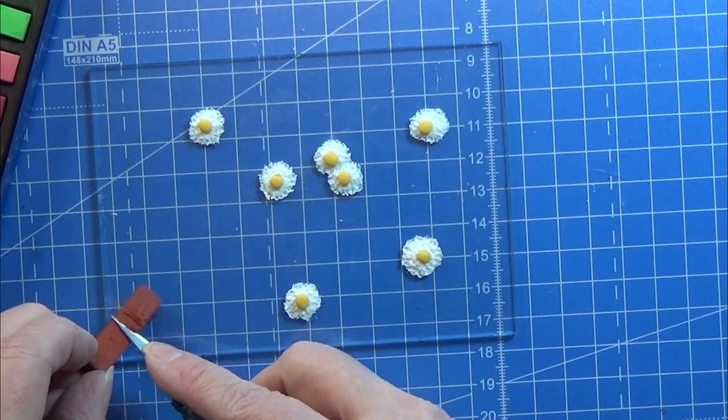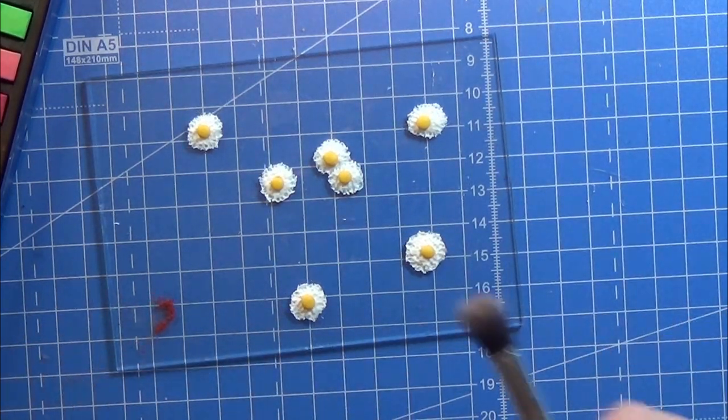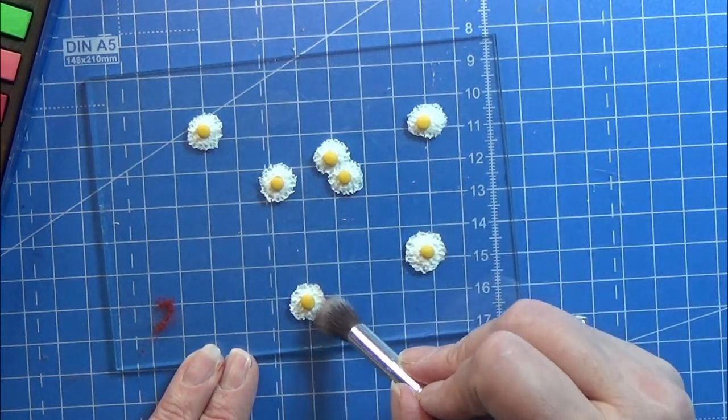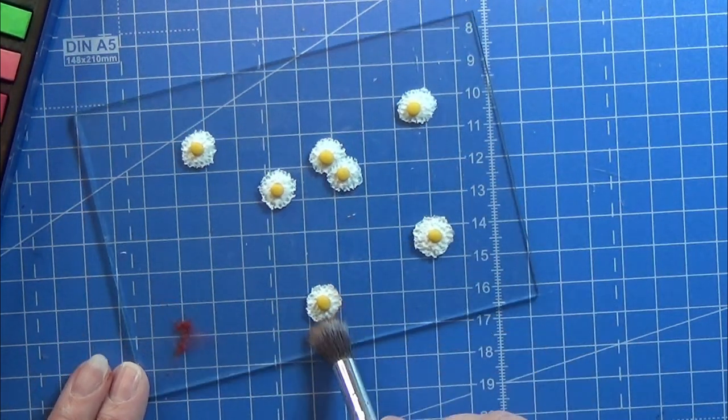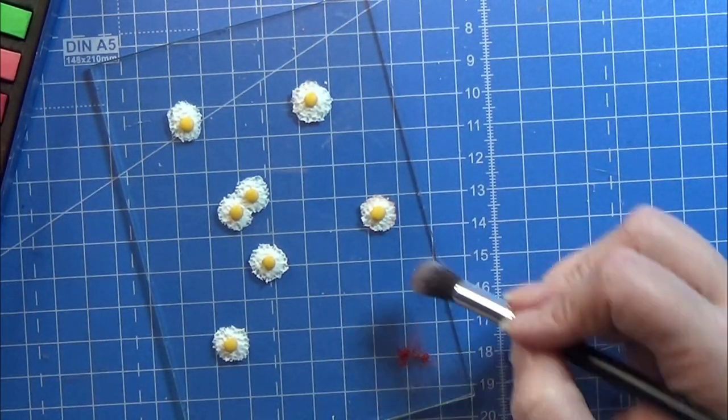I am using some red brown chalk pastel. This is a soft pastel and some dark brown to color the edges of the egg white so it looks like it have been kind of burned on the pan.